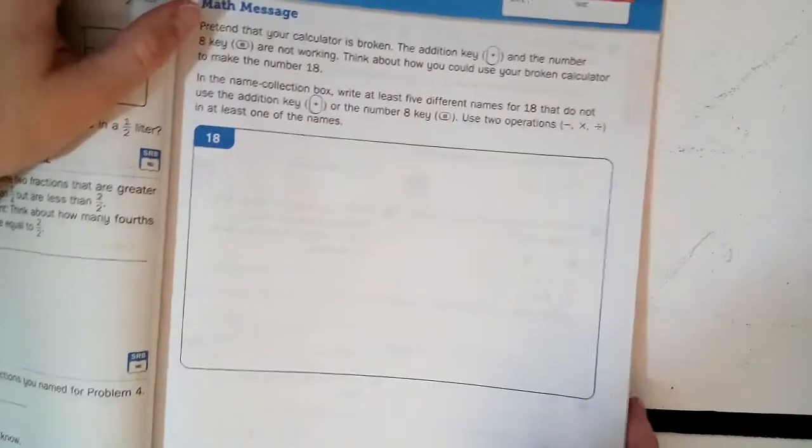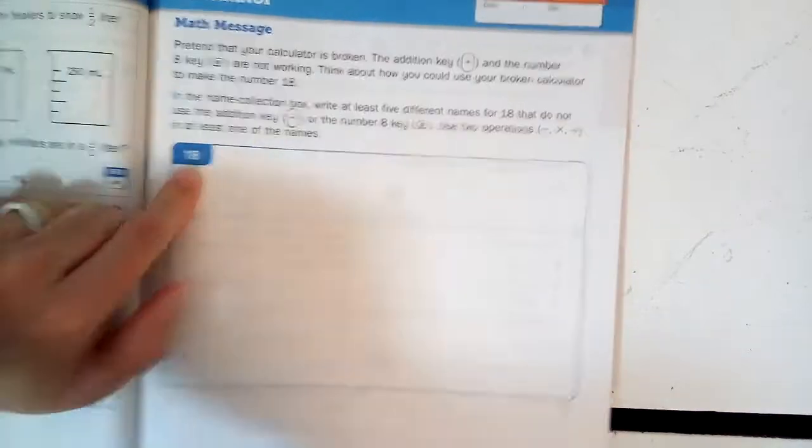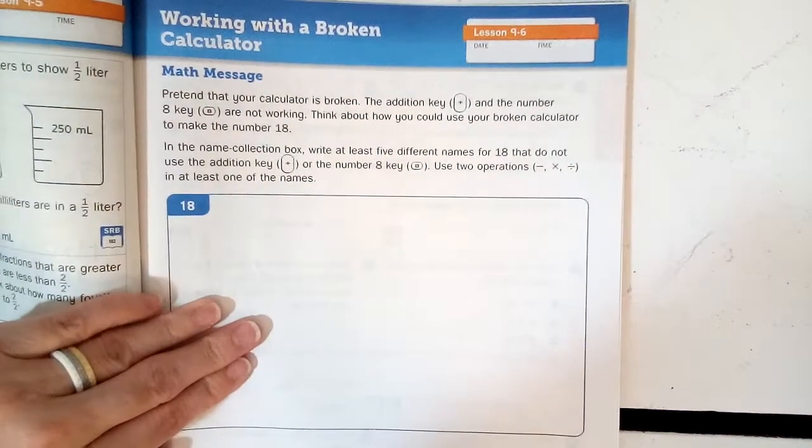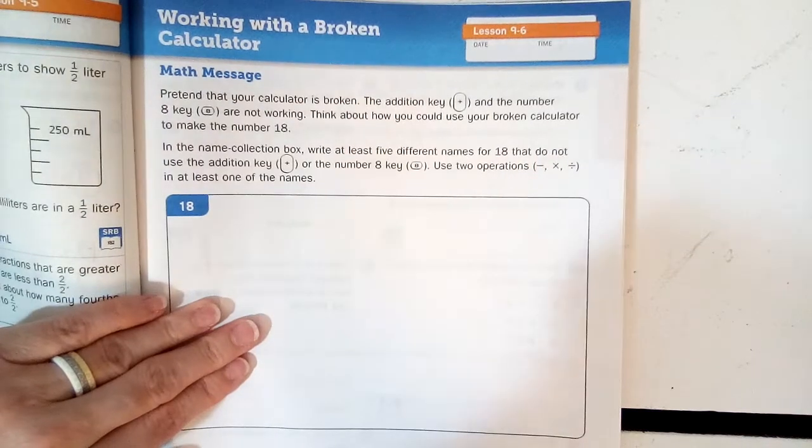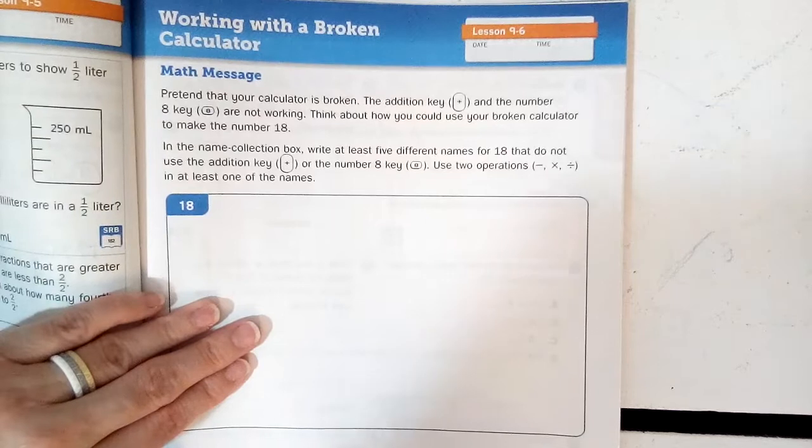Alright, here's page 289. It's just a huge rectangle with the number 18. This is like name collection boxes like we've done in the past. We didn't get to play the game beat the calculator before we left school, but we don't really need a calculator because we're playing pretend.